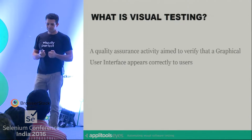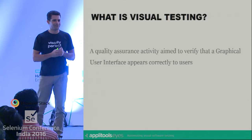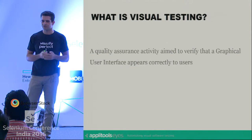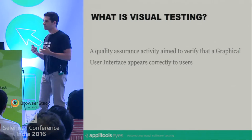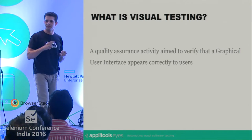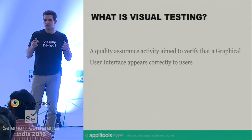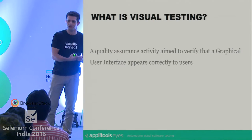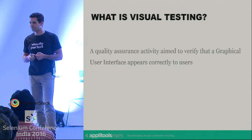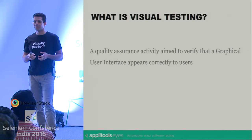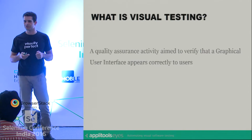So what is visual testing? It is a quality assurance activity that is aimed to verify that the graphical user interface appears correctly to the end user. This goes beyond the traditional functional testing that you used to do with tools like Selenium, coded UI, UFT, Appium, et cetera, where the focus is to test the functionality of the application through the UI. What we are focusing on here is making sure that the UI itself appears correctly — that each UI element appears in the right color, shape, position, and size, and it doesn't overlap or hide any other UI element.